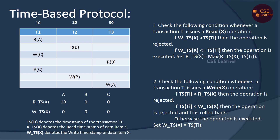Now in Transaction 1, read of A is executed successfully. In Transaction 2, read of B is executed. We check the condition: B's write timestamp is 0, and Transaction 2's timestamp is 20. So B's read timestamp = max(0, 20) = 20. B's read timestamp is updated to 20.